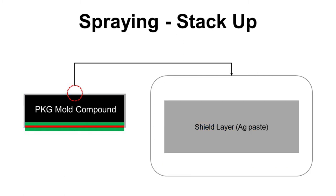For spraying, there is only one layer. Sprayable silver paste is used, and silver paste consists of silver flake and resin.